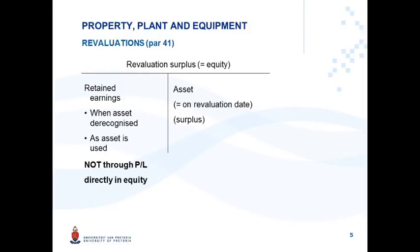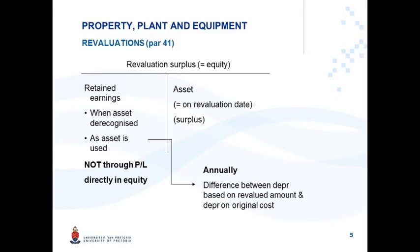When the realization happens as the asset is used, paragraph 41 gives a very specific explanation of how to calculate that annual realization amount. It is calculated as the difference between the depreciation based on the revalued amount and the depreciation on the original cost of the asset. The depreciation based on the revalued amount is calculated by taking the revalued amount at the beginning of the period over the remaining useful life of the asset.